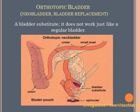The neobladder, or orthotopic bladder, is a bladder substitute. It does not work just like a regular bladder. A normal bladder does two things: it stretches to store and it contracts to empty. A neobladder will stretch to store, but it does not have the ability to contract. This means an individual will urinate in a slightly different way. The new bladder is emptied by relaxing the sphincter muscles and contracting the abdominal muscles, forcing the urine out.